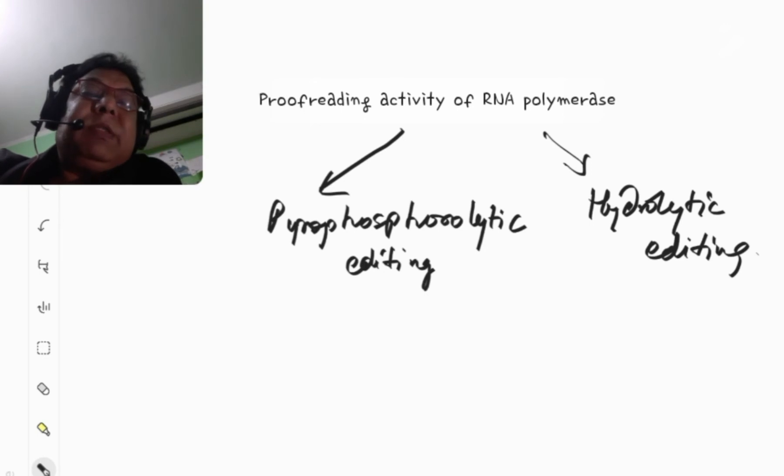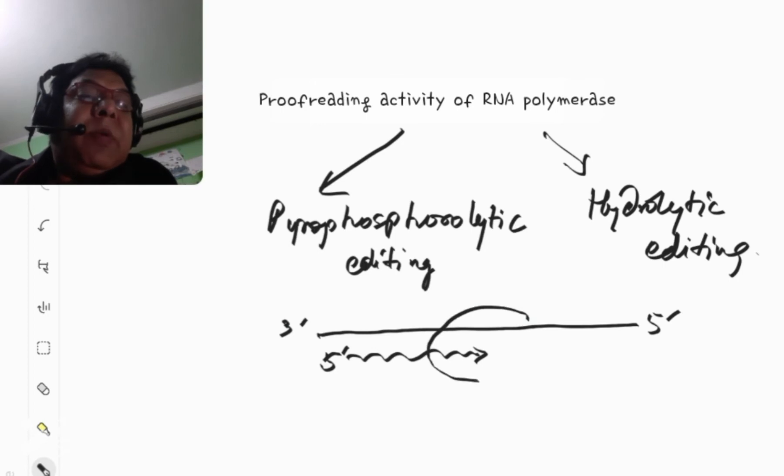So, let us understand what are these two. Say, this one is the template DNA. This is 3' end, and this is the 5' end. And the RNA synthesis occurs in the 5' to 3' direction. So, this is 5' and here is your RNA polymerase that has come.